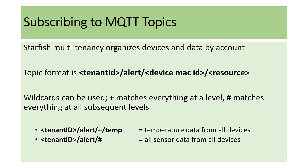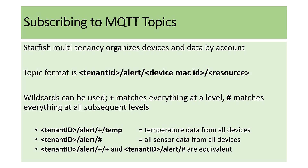Another example would be your tenant ID / alert / #, which would return all sensor data from all devices. One thing to note is that since the pound wildcard is multi-level, the two topics listed here — tenant ID / alert / + / + and tenant ID / alert / # — are basically equivalent. Both will return all data from all devices.